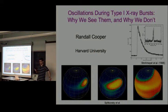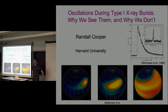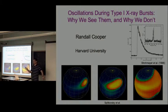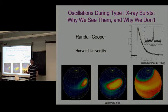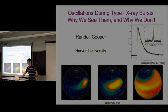Those are the two things I'm going to be addressing. We'll see that these oscillations occur in only a subset of Type I X-ray bursts. Not all - if you look at one system, sometimes the bursts show oscillations, sometimes they don't. In some systems they never show oscillations, sometimes almost always. By addressing these questions, I want to explain why we see the oscillations sometimes and why they're suppressed.